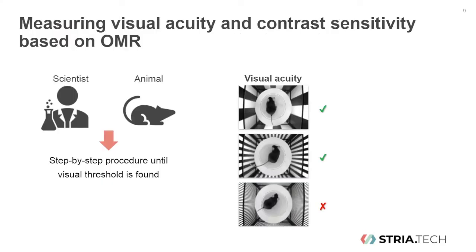This is why we can take advantage of the optomotor reflex to find out how well the animal can see and quantify its visual abilities. We can observe the mouse and check if the optomotor reflex is triggered while making the stimulus more and more difficult until the reflex is no longer triggered. For example, we can make the stripes finer and finer until the optomotor reflex stops — that's when we have reached the animal's visual acuity threshold.